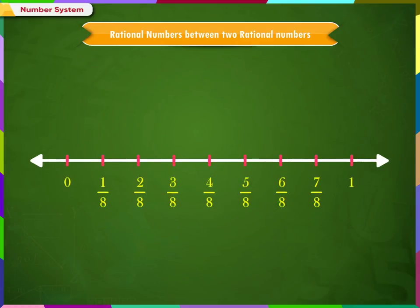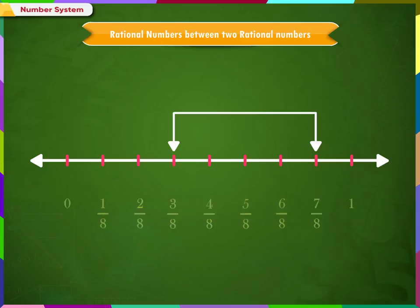Let us now look at rational numbers. How many rational numbers can there be between 3/8 and 7/8? Mark the rational numbers from 1/8, 2/8,